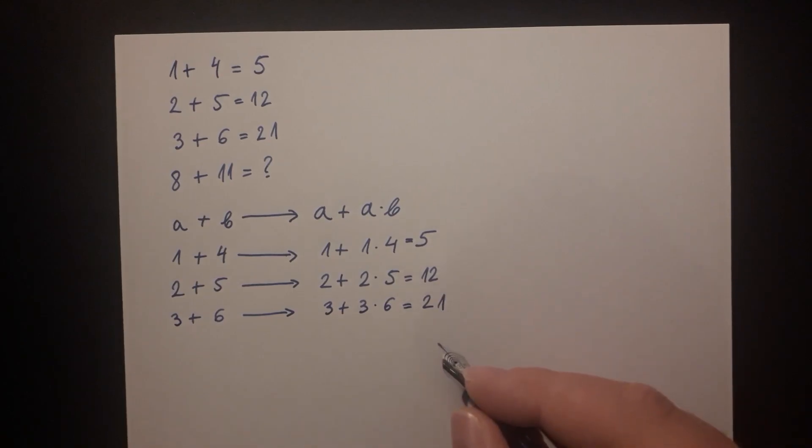The fourth and the final line is 8 plus 11 and that is going to be interpreted as 8 plus 8 multiplied by 11 which is equal to 96.